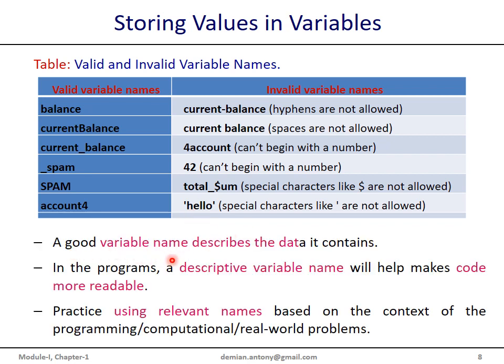A good variable name normally describes the type and structure of data, or the context of the data it contains. In programs, a descriptive variable name helps other programmers and readers of code to understand the flow and logic of the program. Always practice using relevant names based on the context of the programming or real-world problem.